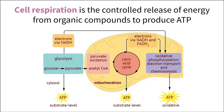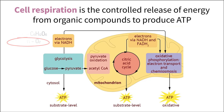Cellular respiration, now in a bit more detail, is really defined as the controlled release of energy from organic compounds to produce ATP. This is a multi-step process that occurs when both glucose and oxygen are present, which is also known as aerobic respiration, aerobic meaning in the presence of oxygen. Let's focus on a basic overview of this process and leave out the nitty-gritty details.